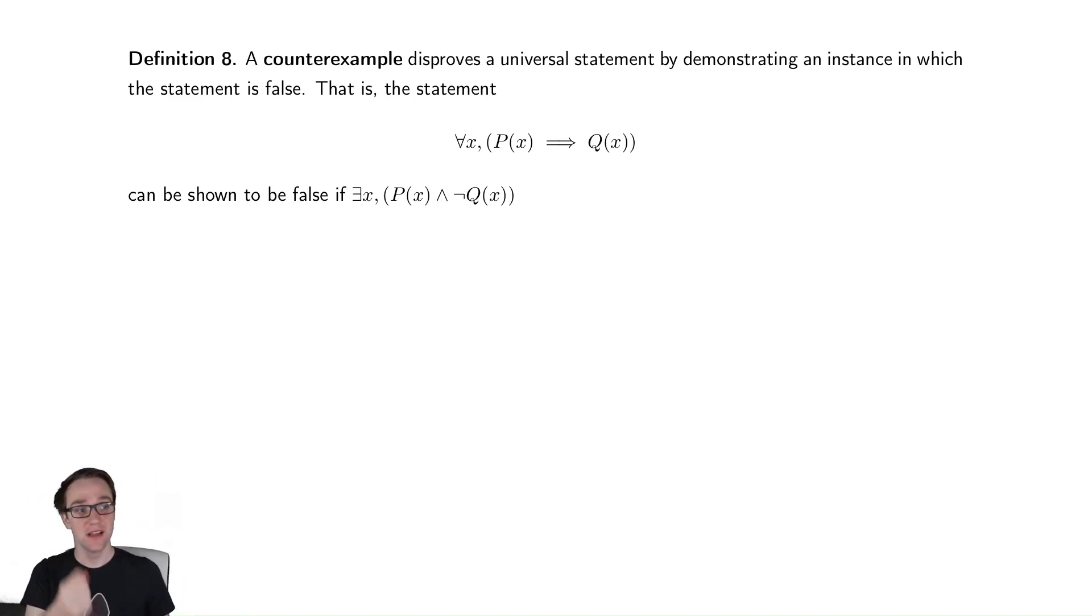If you can find something that proves that wrong, one instance in which it's wrong, then you have proven the original statement wrong. It's a way of disproving a generalization. We'll see several examples of this as we go through our future videos. But for now, you're trying to disprove a universal statement by finding one instance in which it is false. This is not a method of direct proof, but a way of proving that something is false.